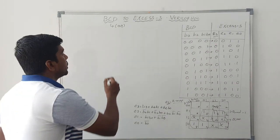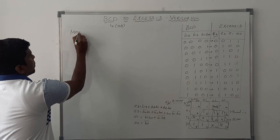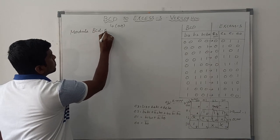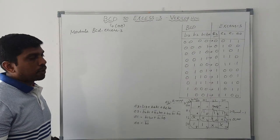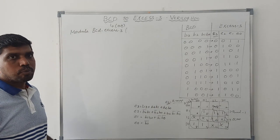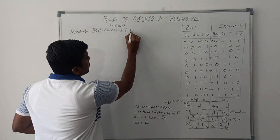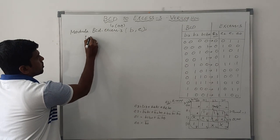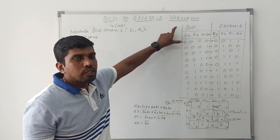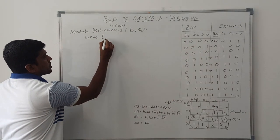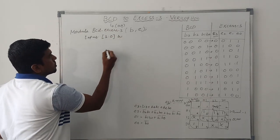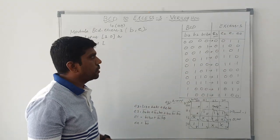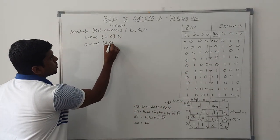Now I am going to write the Verilog HDL code for BCD to XS3. As usual, first write 'module', then the module name 'BCD_to_XS3'. Within the brackets, mention the input and output variables B and E. Then declare: input [3:0] B, and output [3:0] E.